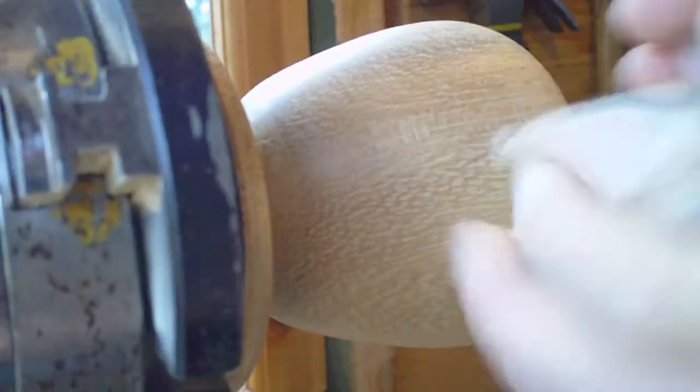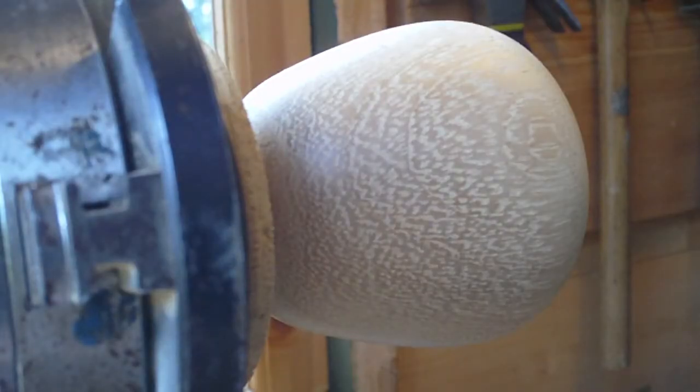After every sanding of a different grit, I buffed the piece to get rid of any dust that got caught in the pores of the wood. Now I'm going to go to 600 grit. I'm playing close attention to the top of the wood as that's normally where I get the best results, the smoothest results when I'm sanding.